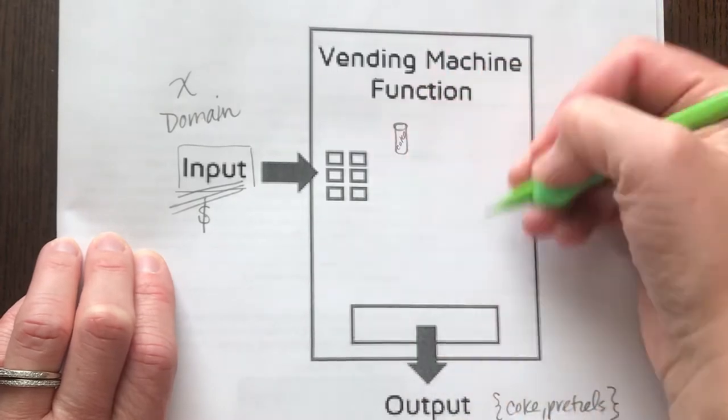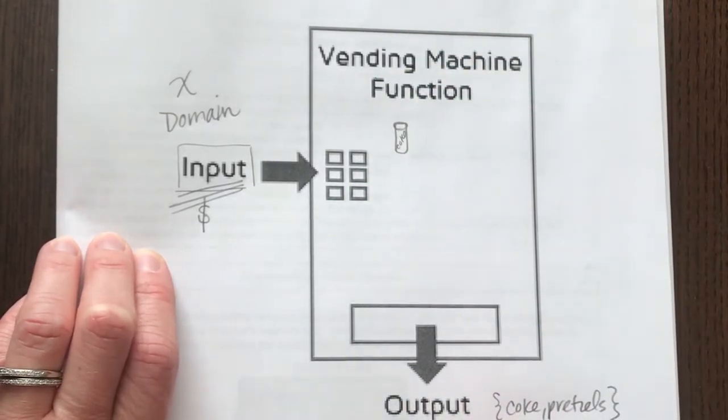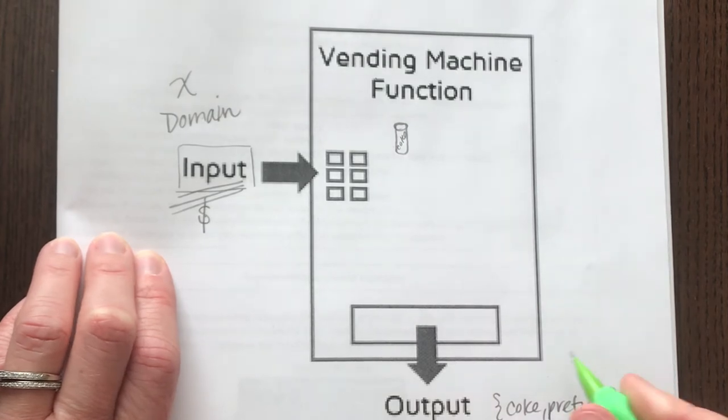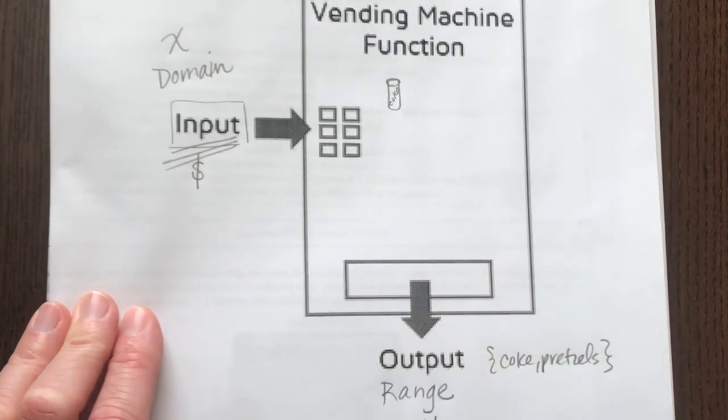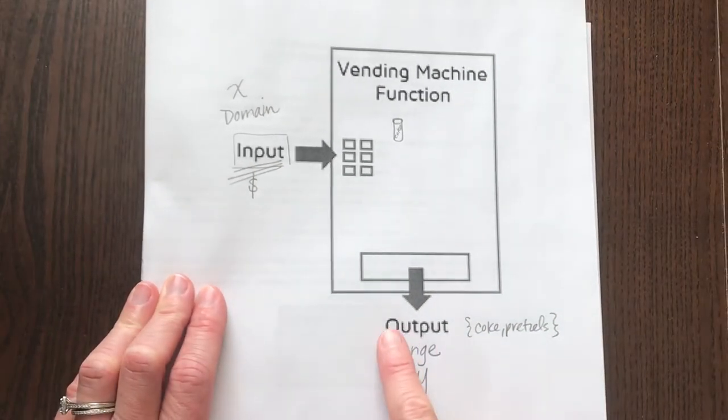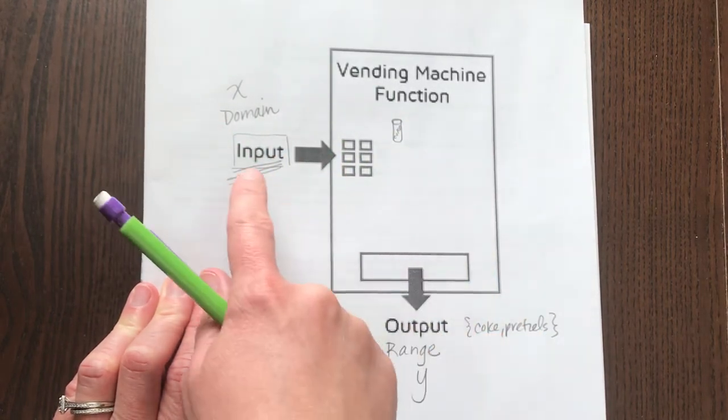And then something happens inside the vending machine that is your function. And what you get out is called the range, which would be the y values of an actual function if it's y equals mx plus b. But your input is different than your output.